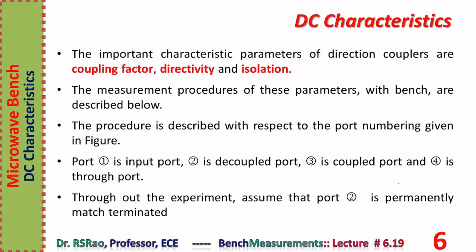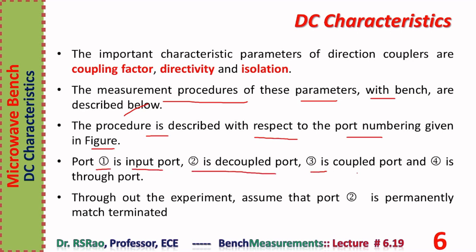Now moving to the second part of this session: measurement of coupling factor, directivity, and isolation pertaining to a directional coupler. The measurement procedures of these parameters with the bench are described here, with respect to the port numbering given in the figure. Port one is the input port, two is the decoupled port, three is the coupled port, and four is the throughput port.